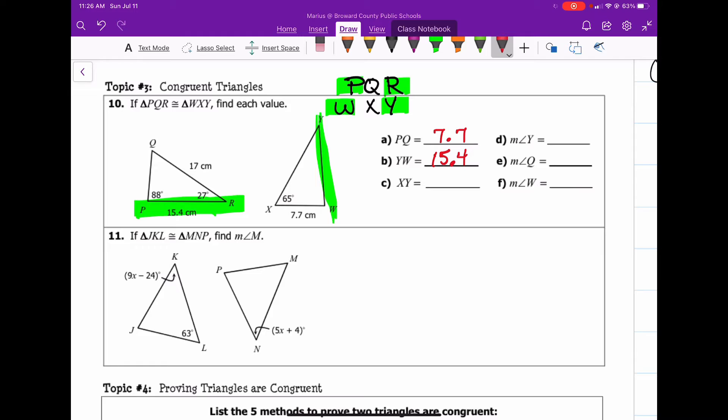All right. Then we have, and let me go ahead and erase those markings. And now we're going to take a look at XY. So XY is the same as QR. XY, QR. So that's 17.